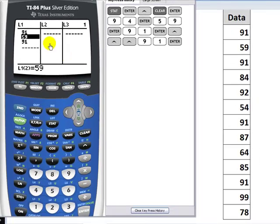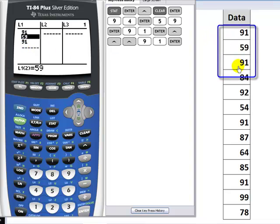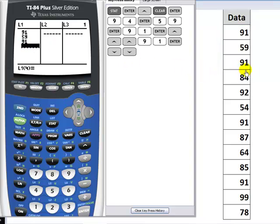So now the first three numbers, 91, 59, 91, are matching my data set. I'm going to go down, down. I'm now in the fourth position, and I will continue with the fourth number, which is 84. 8, 4, Enter. Next number is 92. 9, 2, Enter. I will continue in this manner until I enter the last number.